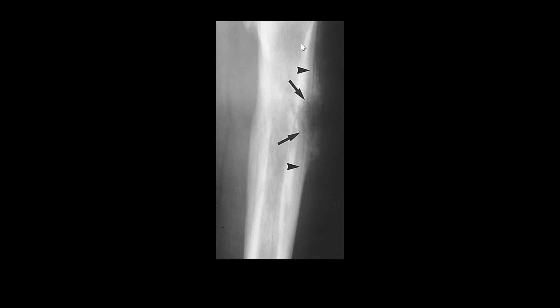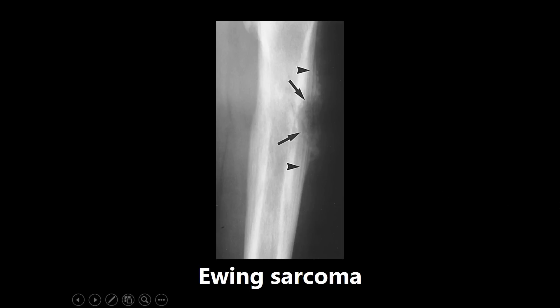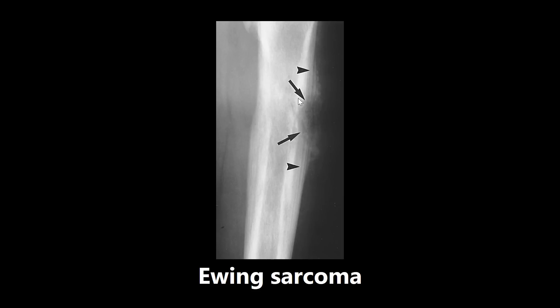This next one is an x-ray with arrows pointing to this area — this is an example of Ewing sarcoma. The classic finding is this onion skinning appearance, the different layers or lines of the tumor. Ewing sarcoma is associated with a translocation between chromosome 11 and chromosome 22. A way many students remember that: 11 plus 22 equals 33, and that was Patrick Ewing's basketball number. So think Patrick Ewing, Ewing sarcoma, translocation 11;22, and the onion skin appearance of the bone.